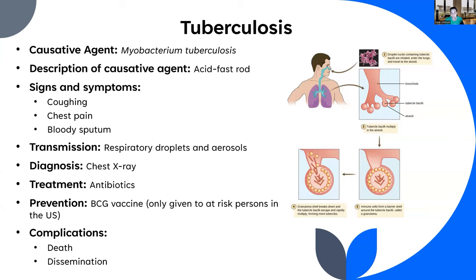Complications: death, and dissemination. Dissemination is never a good word when applied to disease. If tuberculosis gets out of the lungs and into other parts of the body, you're looking at death — even in the case of treatment in many cases.